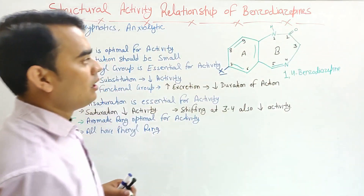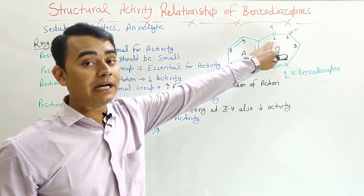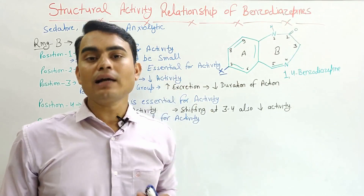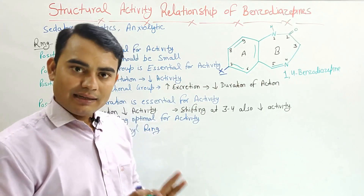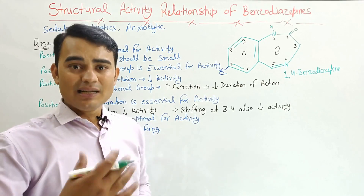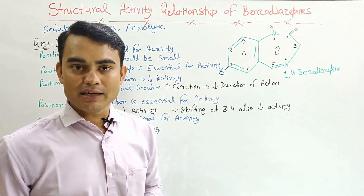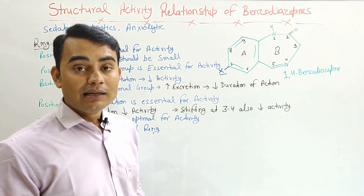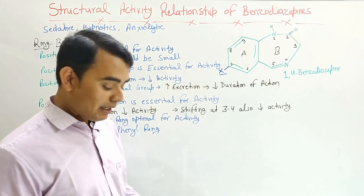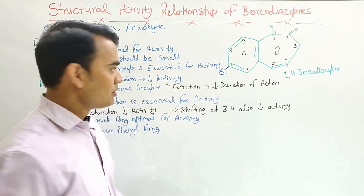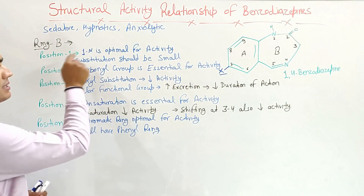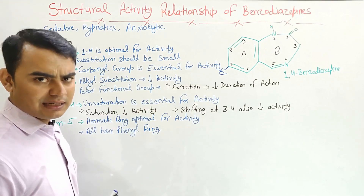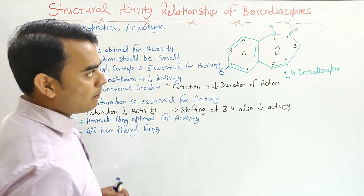In ring B, position 1 should have nitrogen. This nitrogen can be substituted by a smaller alkyl group like methyl — that is acceptable for activity — but larger groups decrease the activity. One exception is flurazepam, which has a diethylaminoethyl group and still retains activity. So position 1 nitrogen is optimal; substitution should be small, as larger groups may decrease activity.